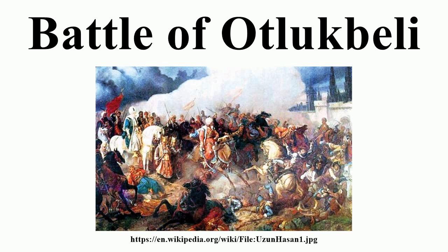In response to Uzzan Hassan's treaty with Venice, Ottoman Sultan Mehmed II first sent various Janissary contingents, commanded by various figures including Radu cel Frumos. These contingents guarded crucial garrisons and awaited the Ottoman onslaught on the Anatolian rebels.